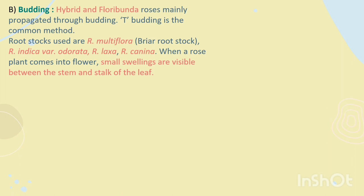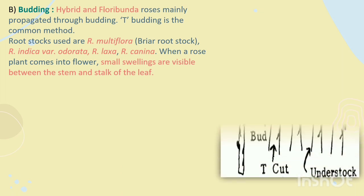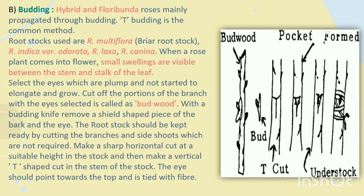Budding: Hybrid Tea and Floribunda roses are mainly propagated through budding. T-budding is the common method. Rootstocks used are Rosa multiflora, Briar Rootstock, Rosa indica variety Odorata, Rosa laxa, and Rosa canina. When a rose plant comes into flower, small axillary buds are visible between the stem and stalk of the leaf. Select eyes which are plump and have not started to elongate. Cut off the portion of the branch with the selected eye — this is called budwood. With a budding knife, remove a shield-shaped piece of bark with the eye. The rootstock should be prepared by cutting unnecessary branches and side shoots. Make a sharp horizontal cut at a suitable height and then make a vertical T-shaped cut in the stem of the rootstock. The eye should point towards the top and is tied with fibre.